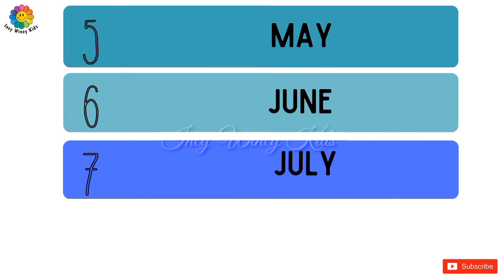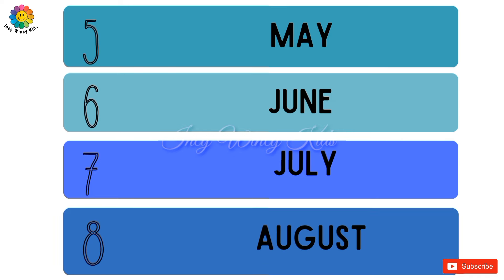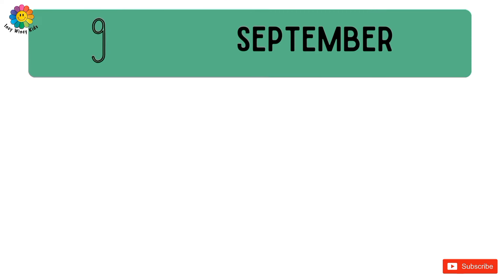The seventh month is July. The eighth month is August. The ninth month is September.